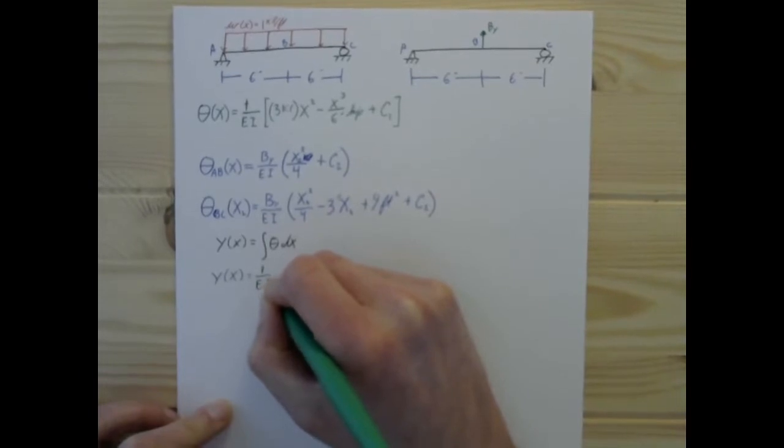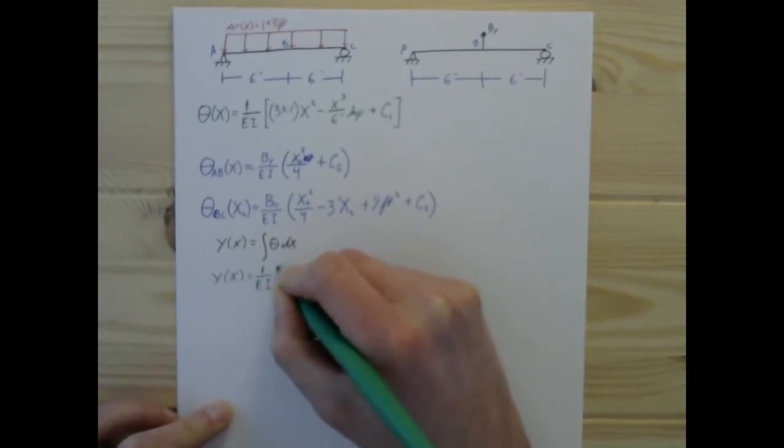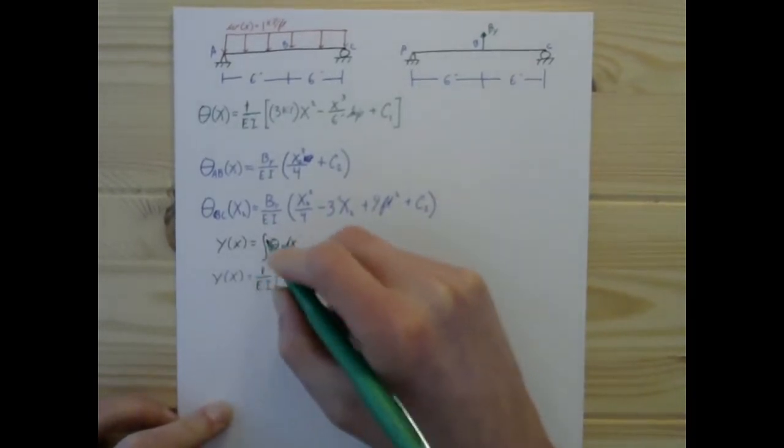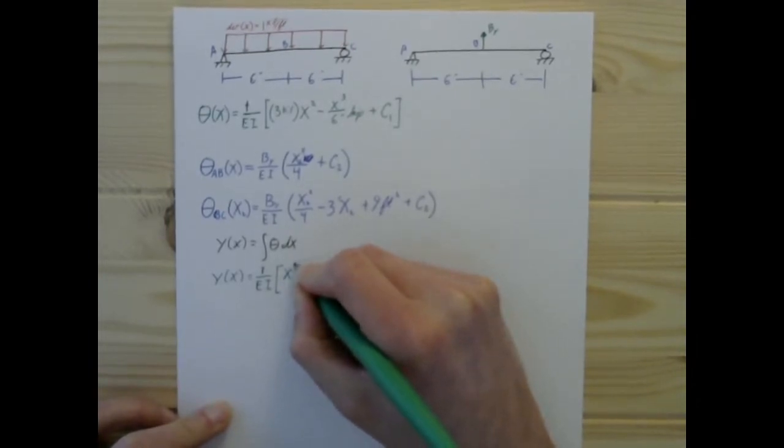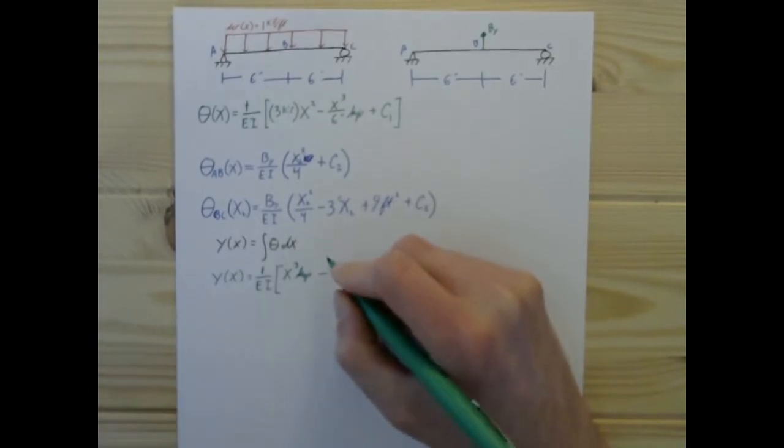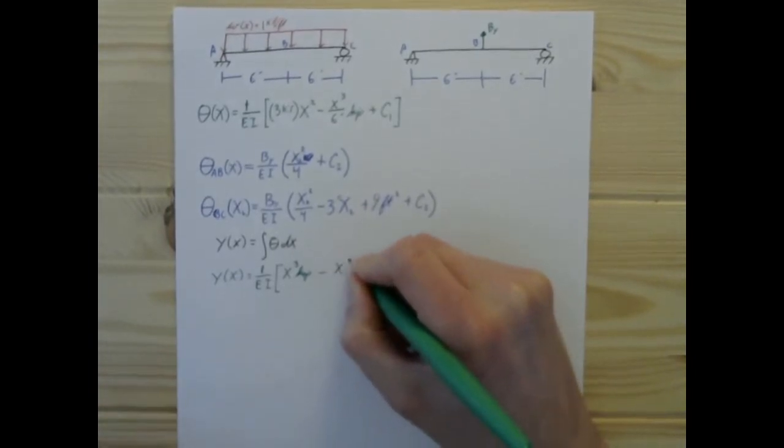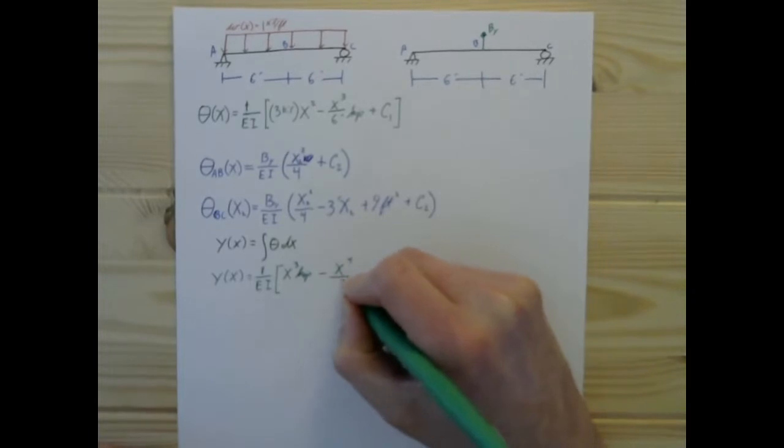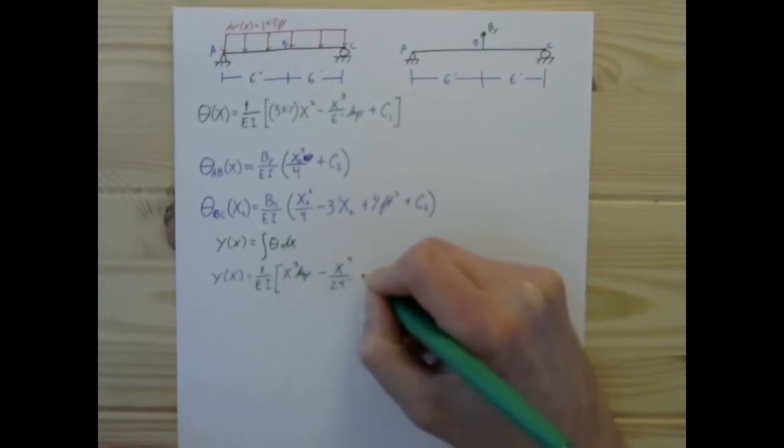1 over the Young's modulus and the second moment of inertia, as always, times x cubed times kip, just one kip, minus x to the 4th over 24 feet kip...